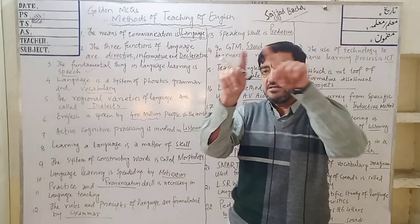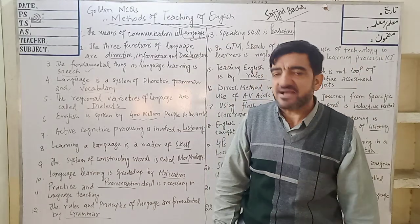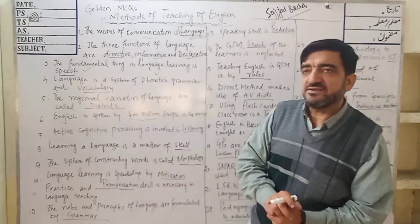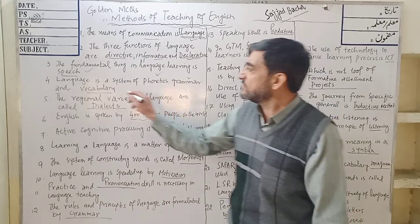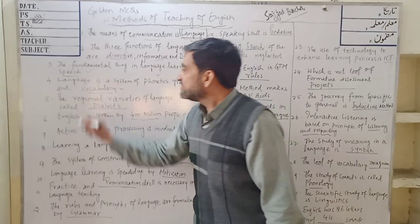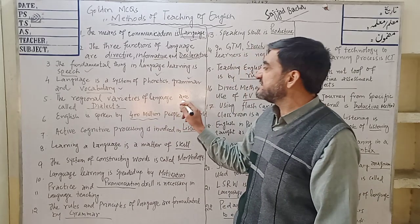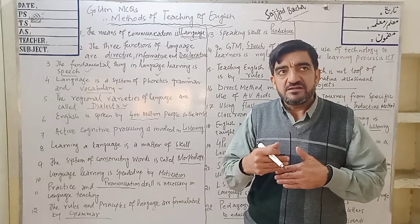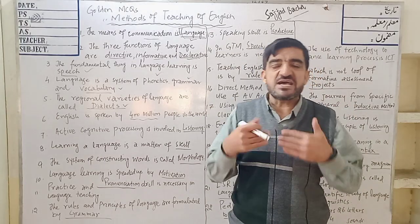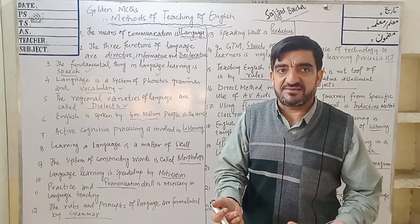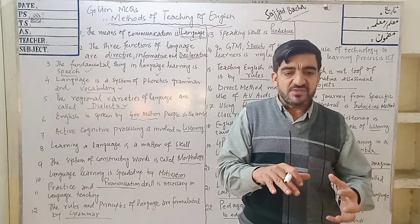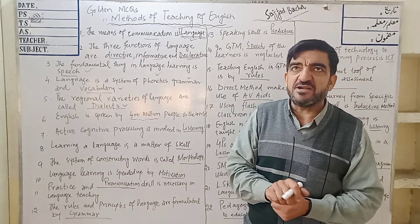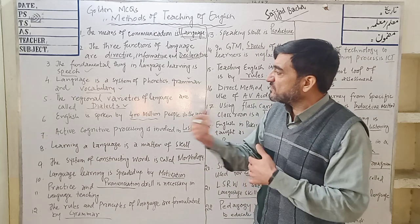These three are known as the trika of English. The first thing is phonetics — phonetics deals with sounds. Then grammar deals with rules, and vocabulary. MCQ 5: The regional varieties of language are called dialects. Dialects are varieties of language spoken in different regions. For example, the language of one region is different in stress, intonation, and pitch from another.